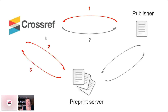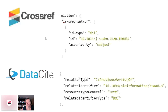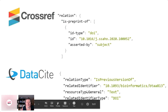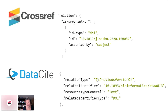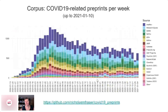In theory. So what does that look like in practice? In the metadata, in the case of Crossref, there's a relation 'is preprint of' with a link to the DOI of the published paper. In DataCite there's something similar — it's also possible to identify something as a previous version of something else, again with a link to that published paper. So I went and looked at to what extent those links between preprints and published papers are actually there in the metadata.